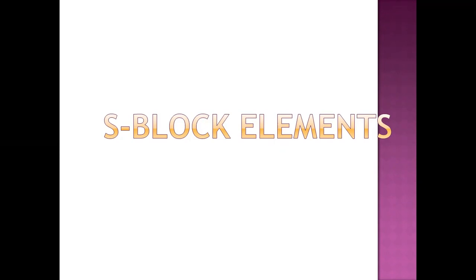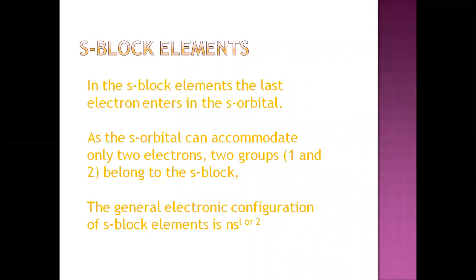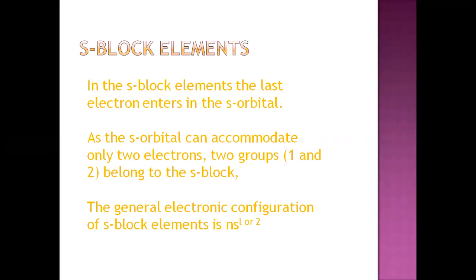S-block elements — we have studied the classification of elements in the periodic table, including s-block, p-block, d-block, and f-block. Today we will start with s-block elements. S-block elements are those in which the last electron enters the s orbital. The s orbital can contain only two electrons, so groups one and two belong to the s-block: the lithium family and the beryllium family.